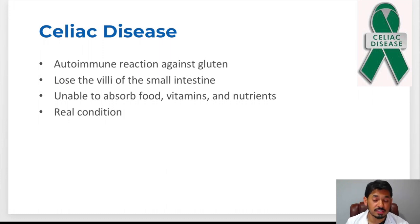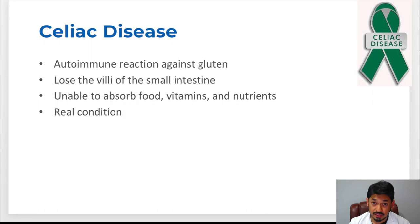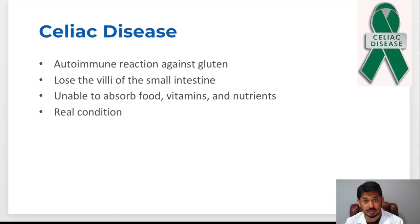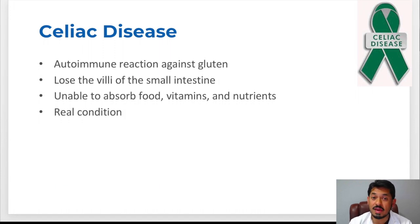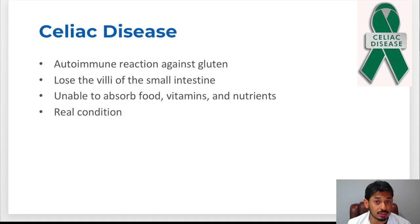Celiac disease is a real condition that people have. This is an actual autoimmune inflammation that occurs within the gut, and it is very different from other conditions you may hear about, like IBS or gluten intolerance. About two percent of the U.S. population has celiac disease, and that number is increasing. But keep in mind only two percent have this real condition — 98 percent of patients in the United States do not have this autoimmune reaction. They may have some intolerance to wheat, but they don't have the autoimmune reaction where you lose the villi when you ingest gluten, which is specific to only celiac disease.